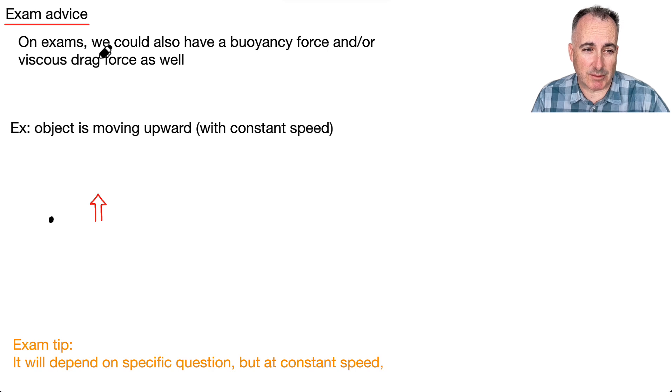So if something is like in some kind of fluid, and then there's a buoyancy, and if it's moving up, then there's a drag force down and so on. You can have all of those together. So let's just say in this example, let's say this object here is going to be moving upwards. That's this arrow right here that's going upwards with constant speed.